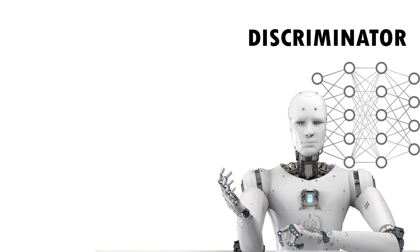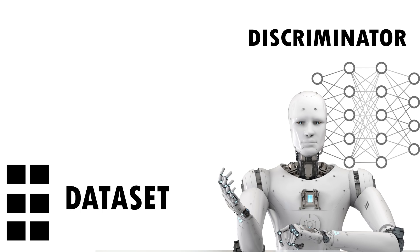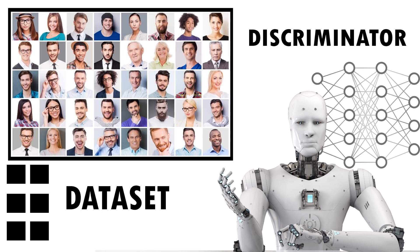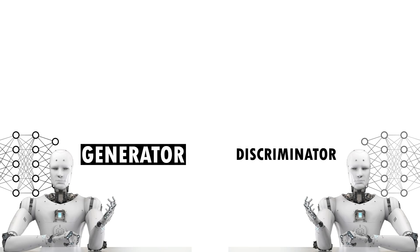First, the discriminator network is trained on a dataset. An example would be showing the network many images of faces until it's able to recognize images of faces from other images. Once the discriminator network is trained, it's pitted against the generator network like a two-player game.